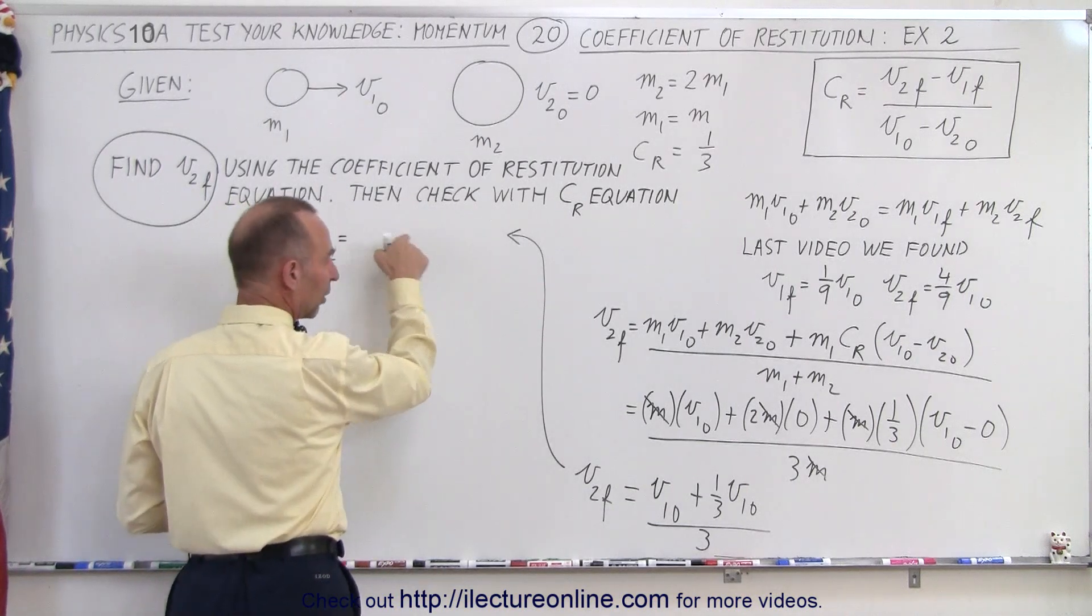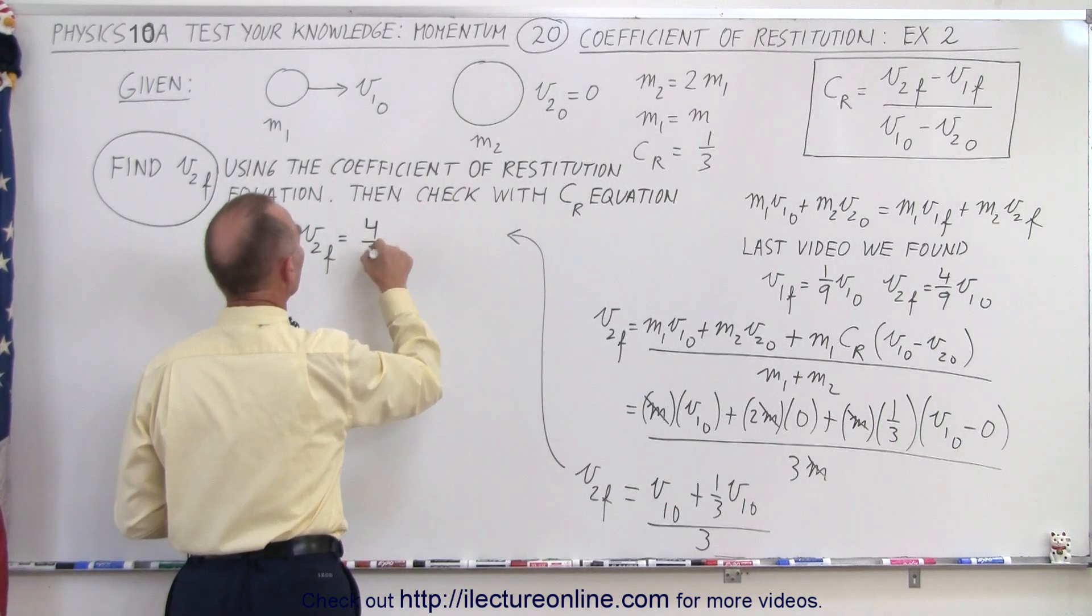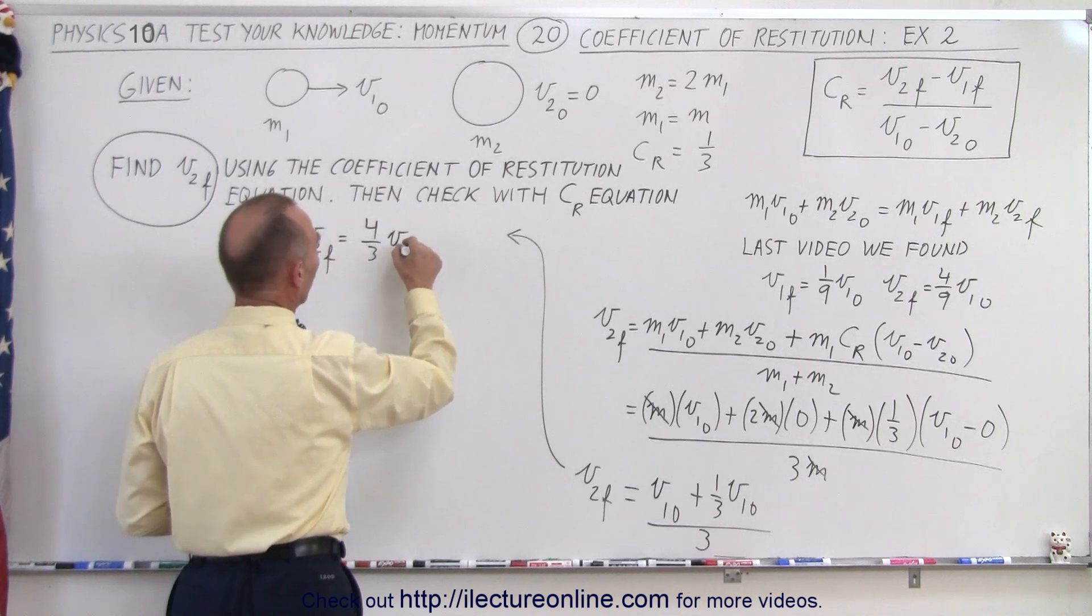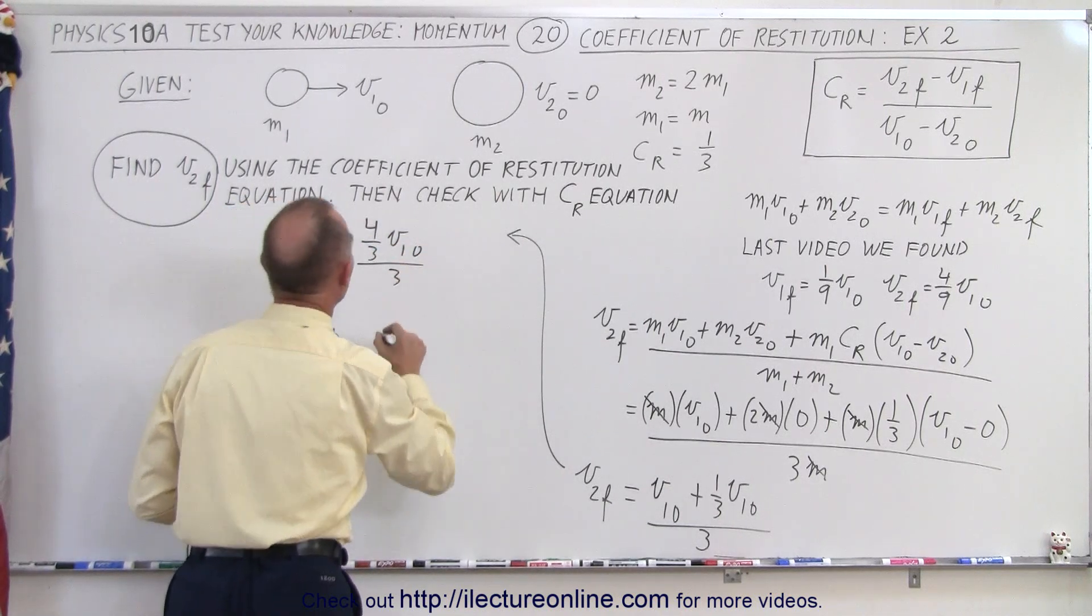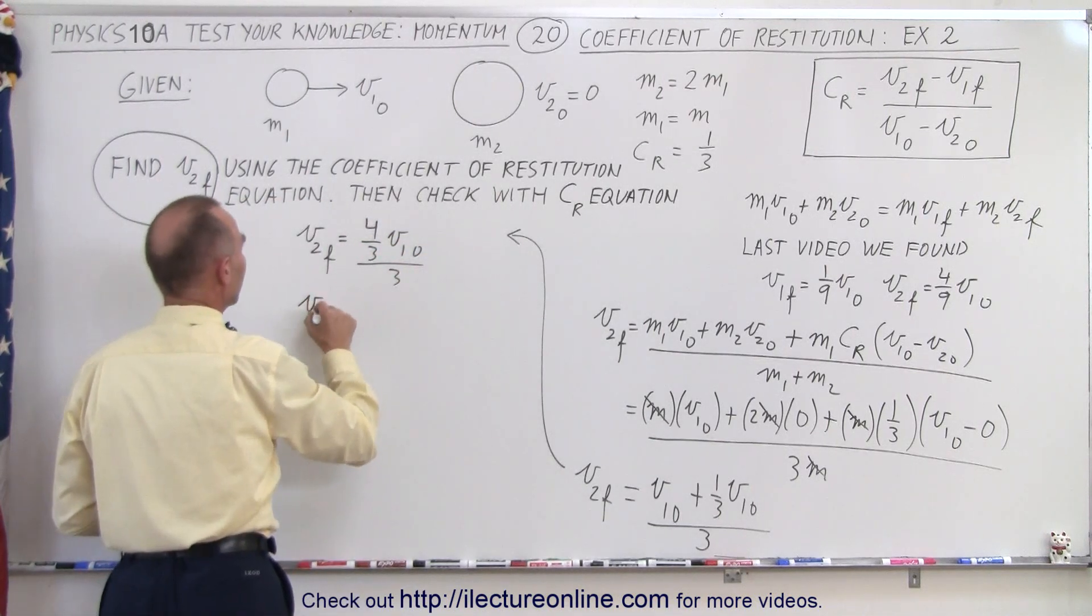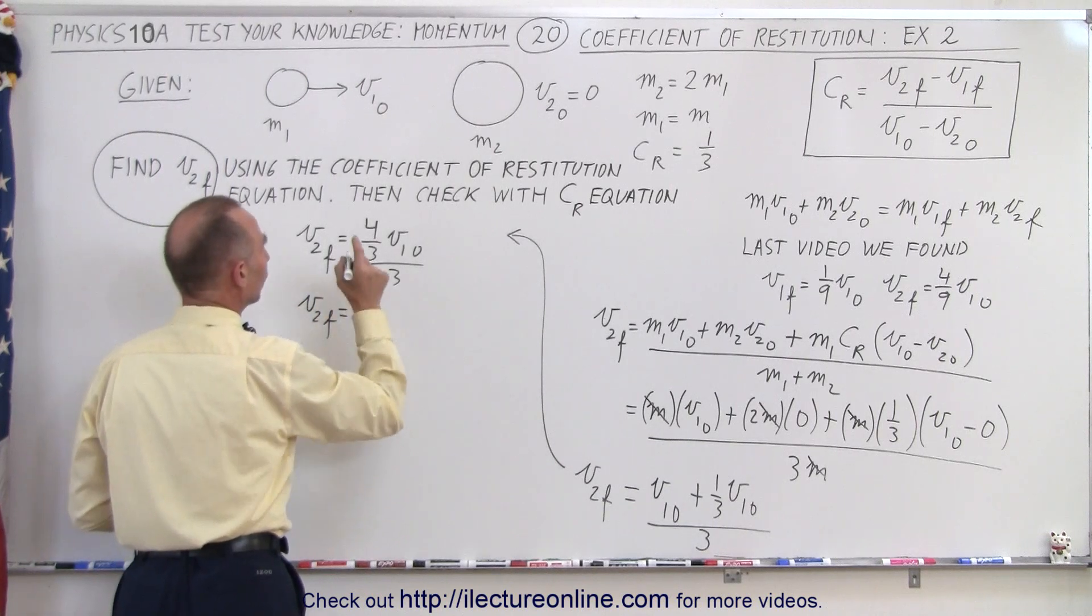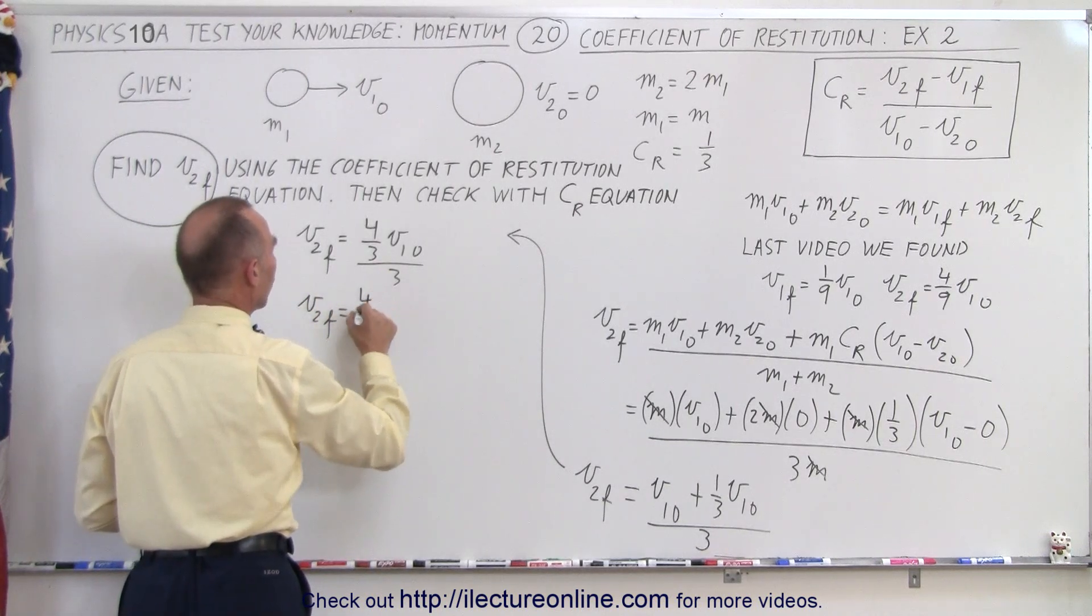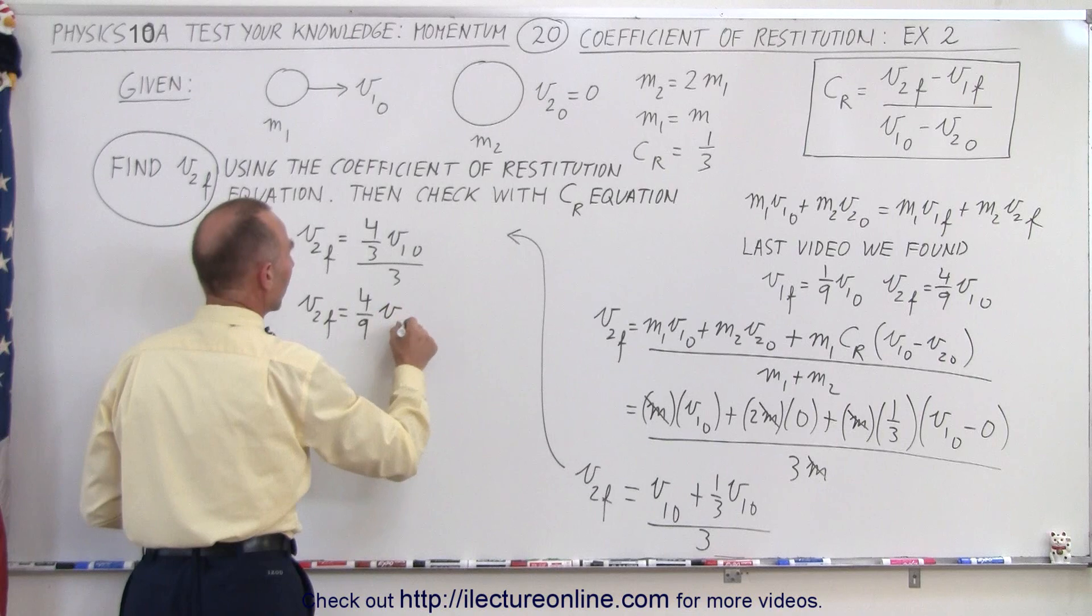So four-thirds v1 initial divided by 3. That means v2 final is equal to four-thirds divided by 3, or four-ninths v1 initial. And hopefully that's the same number, and sure enough that's what we got in the last video.